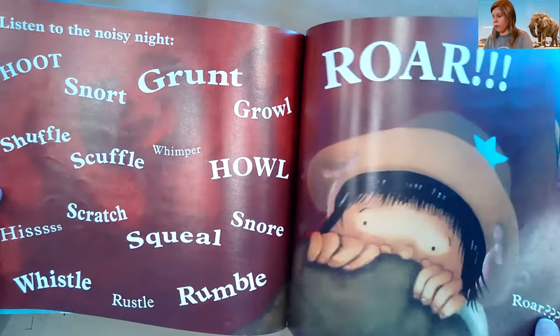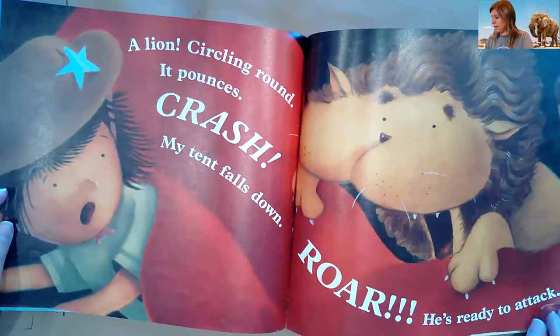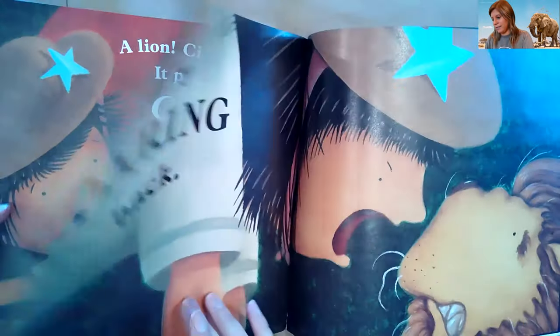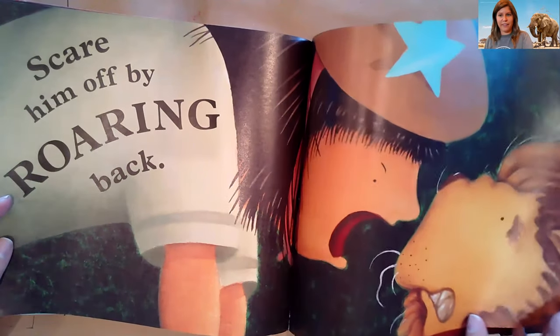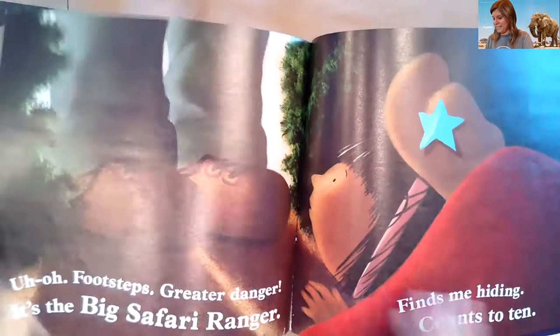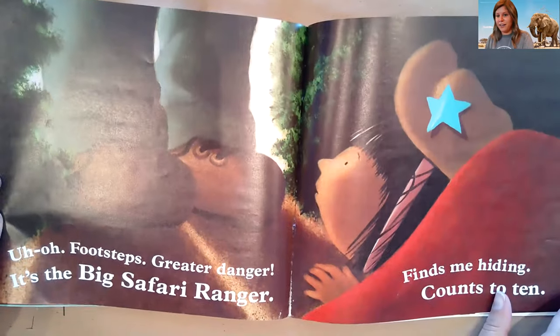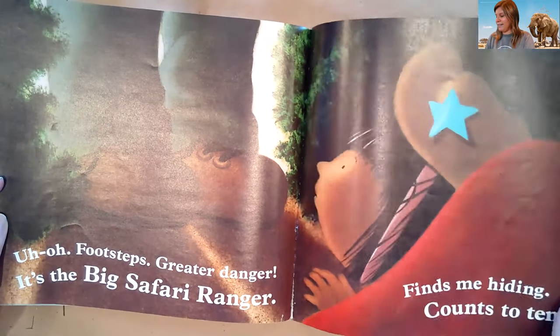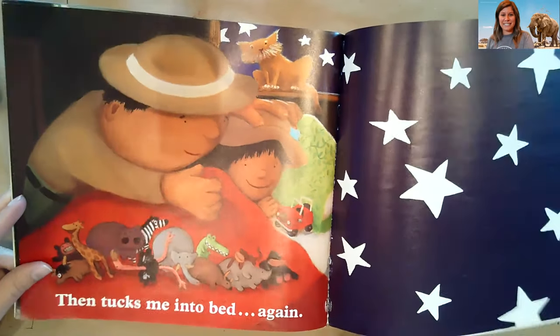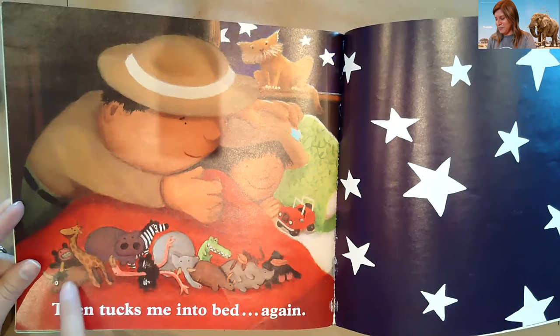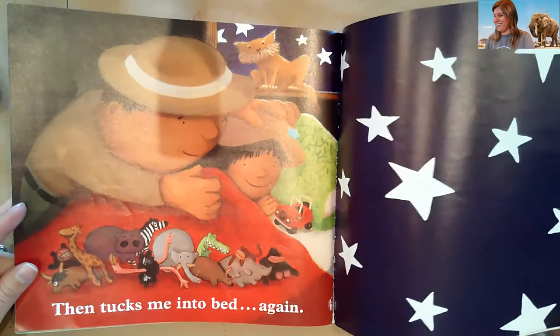Roar? What do you guys think is roaring? A lion circling round. It pauses. Crash! My tent falls down. Roar! He's ready to attack. Scare him off by roaring back. I don't know that I would have done that. Uh-oh. Footsteps. Greater danger. It's the big safari ranger. Finds me hiding. Counts to ten. Then tucks me into bed again. He was in his bed the whole time. Look at all of his toys down here and his Jeep. He still has a safari hat on though.